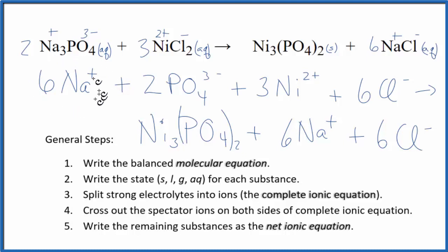In the reactants, we have 6 sodium ions. In the products, we have 6 sodium ions. Cross them out. We have 6 chloride ions in the reactants, 6 in the products. Cross them out.